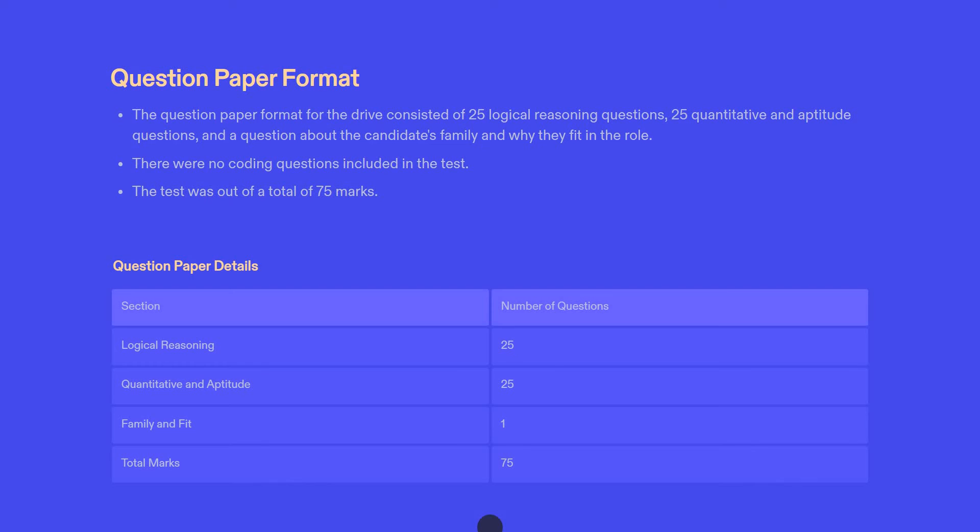The question format is they have given logical reasoning 25 questions, quantitative and aptitude 25 questions, and about your family and why you fit in this company one question. Total is around 75 marks. This is the pattern they have given.